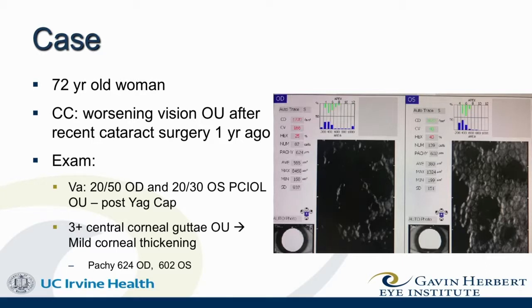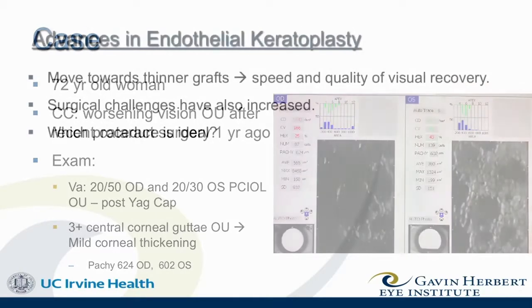Dr. Patel has done a lot of research and shown us that central gutae, even in the absence of thickening of the cornea, can have significant higher-order aberrations, backscatter, and visual distortions for the patient. So what do we do with this patient?